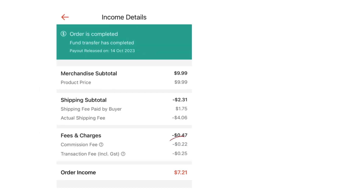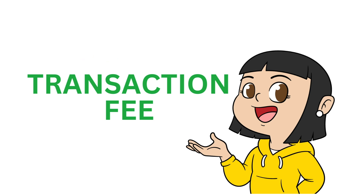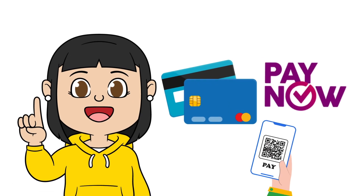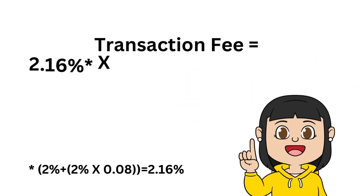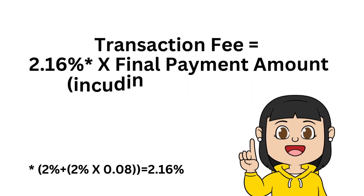For the next fee — the transaction fee — this is a handling fee charged to Shopee sellers on successful transactions made through all forms of payment, including but not limited to credit card, debit card, credit card installment plan, Shopee Pay, PayNow, and more. The transaction fee is 2% of the final payment amount including shipping fee paid by the buyer, after deducting any discounts from Shopee vouchers or Shopee coins applied. It will be rounded up to the nearest cent.